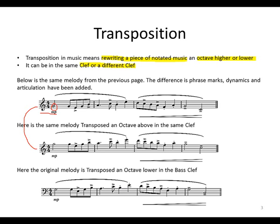You see that G an octave higher will look like that. Also remember, our phrase marks and dynamics remain the same. We've got two slurs, two bars each, and then we have our accents on the same notes. We have our dynamics — there's our crescendo over there. So everything remains the same, except the pitch is an octave higher.